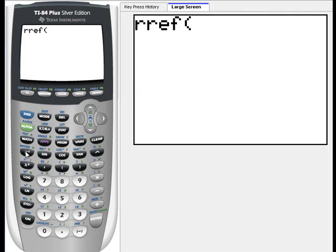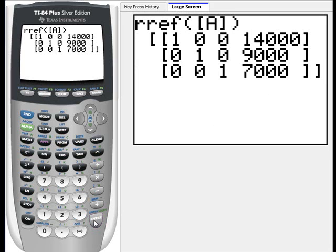There it is. Which puts it in RREF or reduced row echelon form. Now go back to the matrix menu. Hit enter to choose matrix A. Close parentheses. And hit enter. Ta-da!